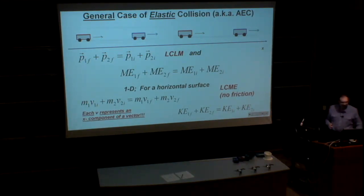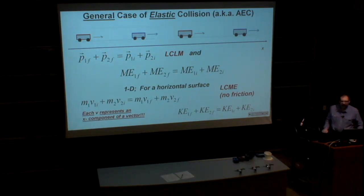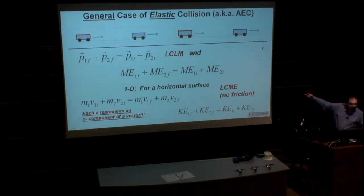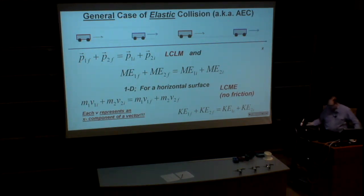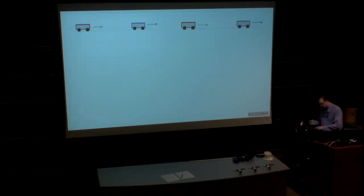Now we talk about a different situation: elastic collision. Elastic, for me, means absolutely elastic, and absolutely means no friction. If there is no friction, mechanical energy must be conserved. So we can write two equations. When we have two equations, we can solve for two unknowns. That's a good mathematical exercise.